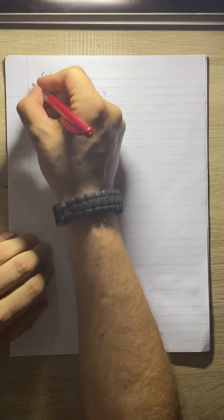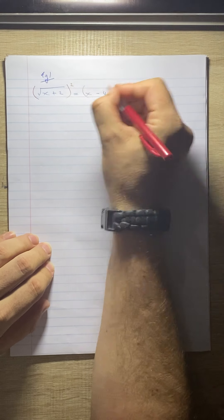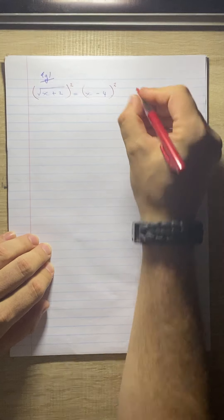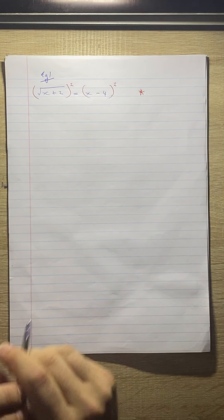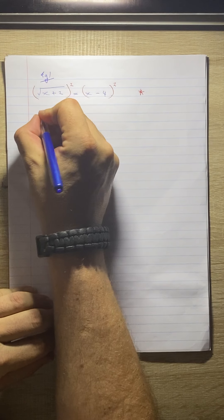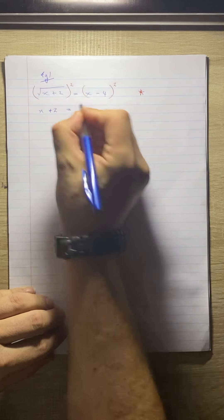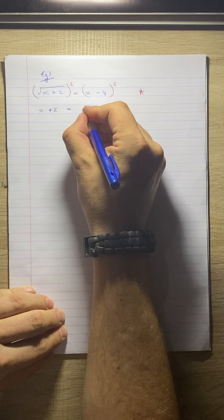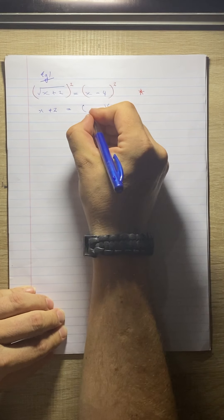Once you've got the surd on its own, square both sides. I'm going to put a star here because we're going to come back to this just now. The square root and the square will cancel and you're left with x plus 2. Remember, the squared means we've got two of these brackets — so we've got x minus 4, x minus 4.